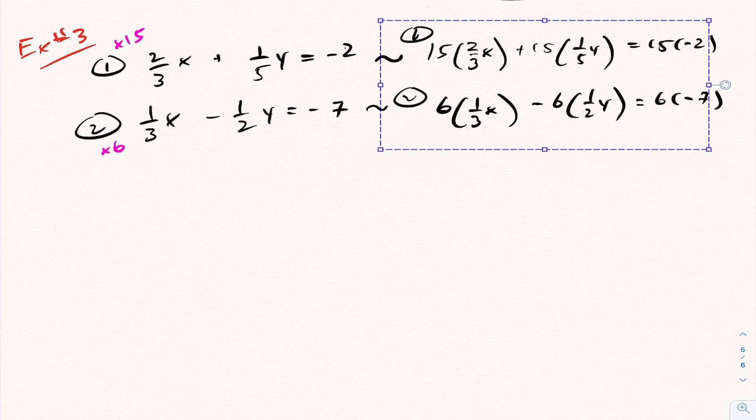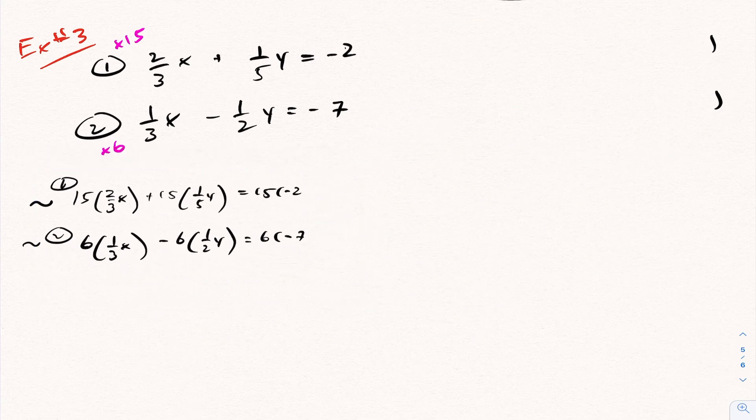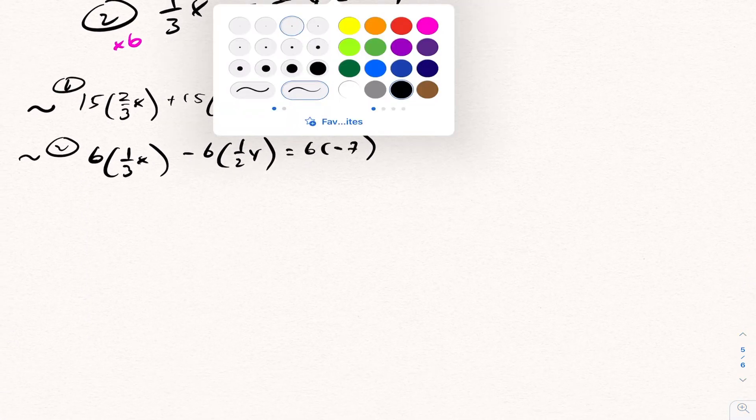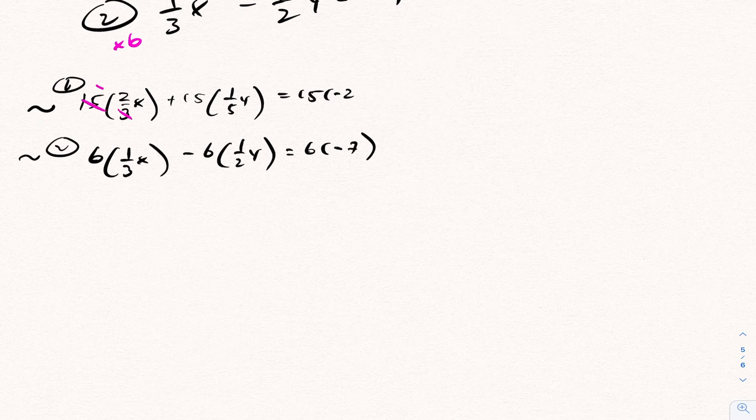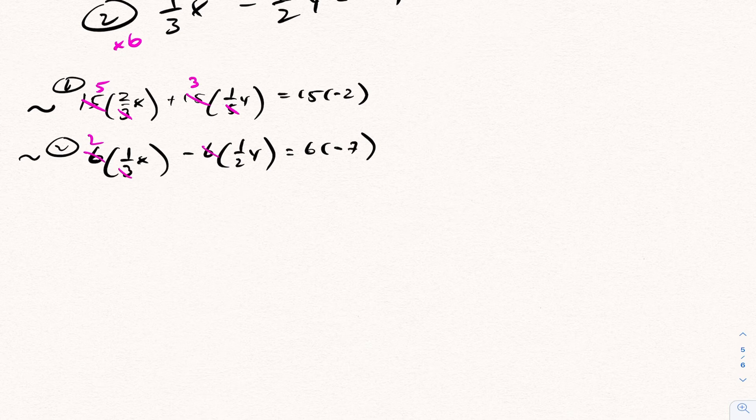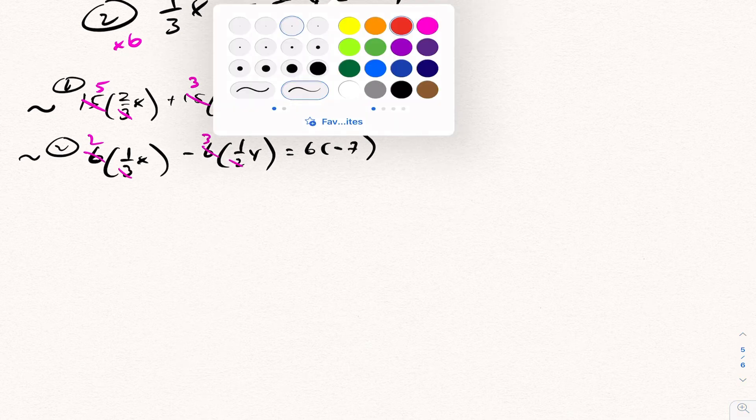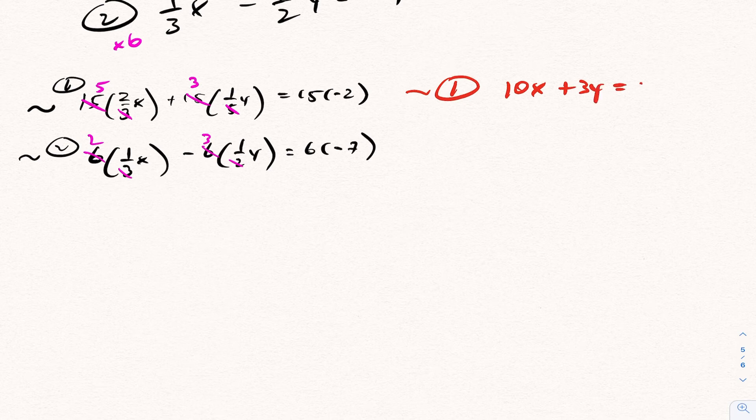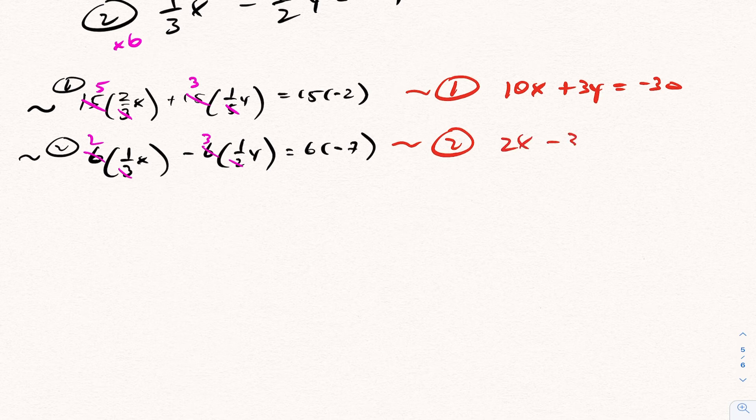So now what I want to do is I've got to reduce this. The 15 and 3 reduce to become a 5. That'll reduce to become a 3. This'll reduce to become a 2. That'll reduce to become a 3. So rewriting our equation, equation 1 is going to be 5 times 2 is 10x plus 3y equals negative 30. And equation 2 is 2x minus 3y equals negative 42.